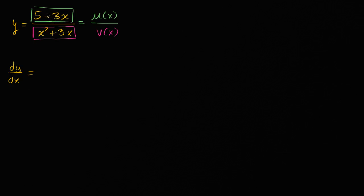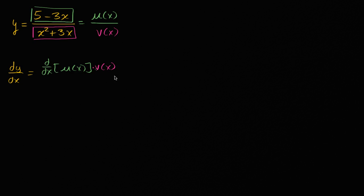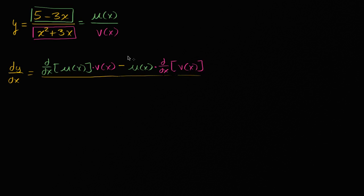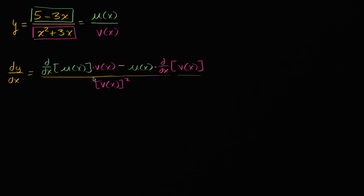This is going to be the derivative of the function in the numerator — d/dx of u of x — times the function in the denominator, v of x, minus the function in the numerator, u of x, times the derivative of the function in the denominator, d/dx of v of x. All of that over the function in the denominator squared. This might look messy, but all we have to do is find the derivatives of u of x and v of x and substitute them back in.